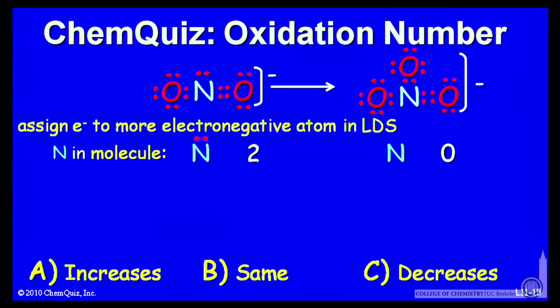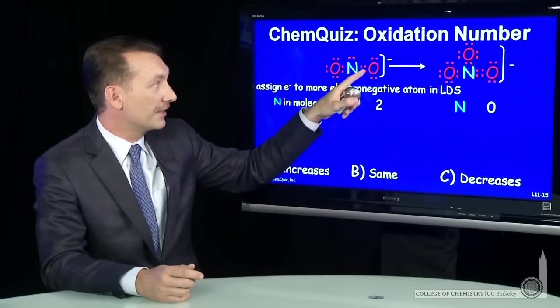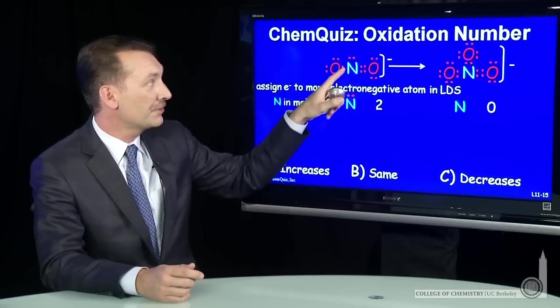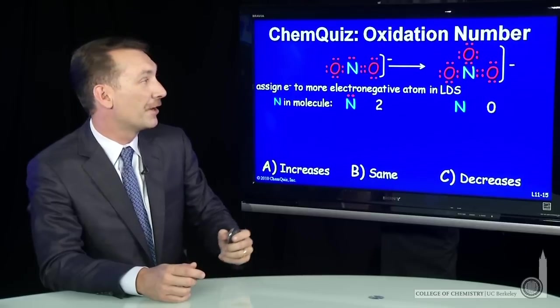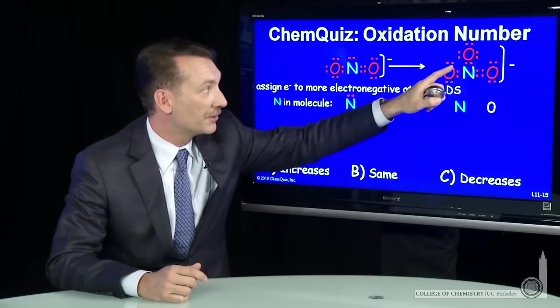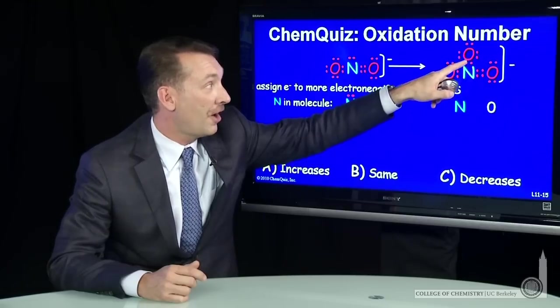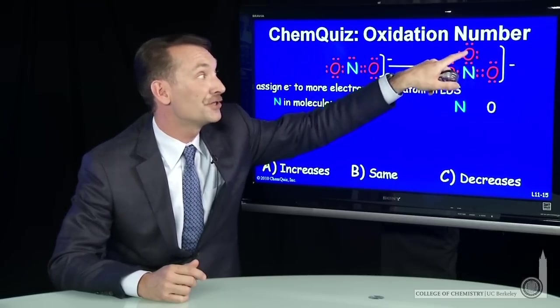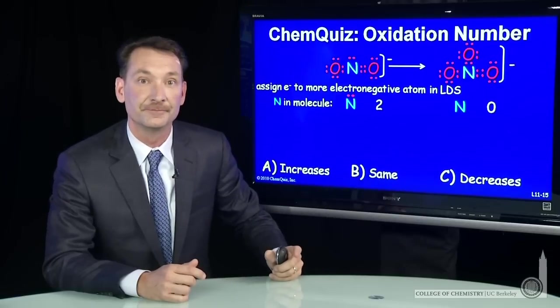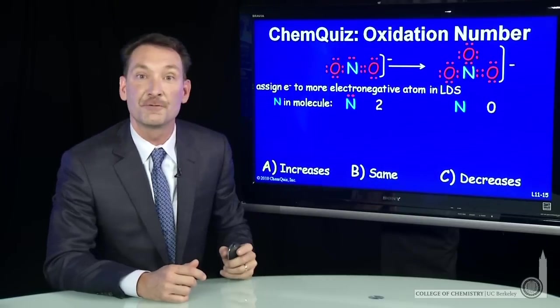Here we have nitrogen. In this molecule, if we assign the electrons in the bonds to the more electronegative element, this nitrogen has only two electrons around it in a lone pair. In this molecule, this nitrogen has no electrons around it because all the electrons are involved in bonds, and the oxygen is more electronegative than the nitrogen. So assigning all these electrons to the oxygen leaves nitrogen with no electrons.